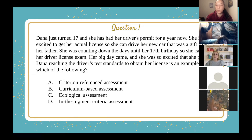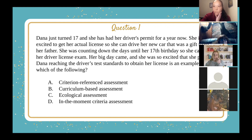Dana just turned 17 and she has had her driver's permit for a year now. She's so excited to get her actual license so she can drive her new car, which was a gift from her father. She's counting down the days until her 17th birthday so she can take her driver's license exam. Her big day came and she was so excited that she passed. Dana reaching the driver's test standards to obtain her license is an example of which of the following?